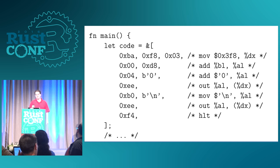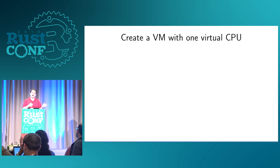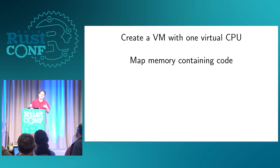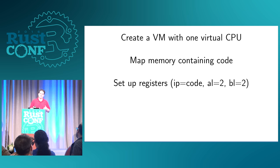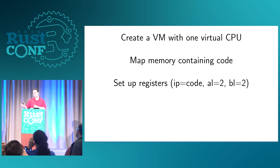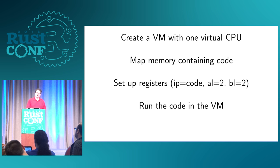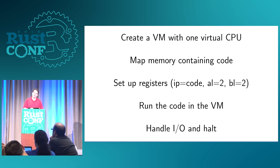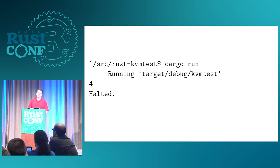On top of that, I'm going to create a virtual machine with one virtual CPU, a bunch of ioctl calls to KVM APIs, map some memory containing that one bit of code, set up the initial registers, point the instruction pointer to that code, point the two initial registers to two and two to give it something to do, and run the code in the virtual machine. Whenever it exits, I need to handle its I/O and the actual halt at the end. So let's run that — it runs a KVM test, it prints four, and it halts.